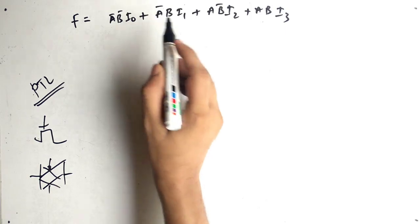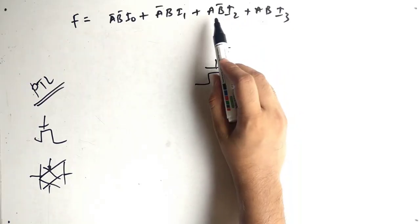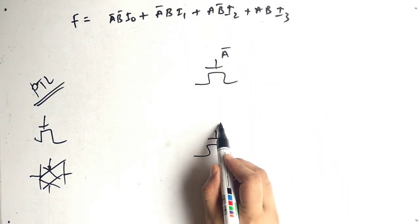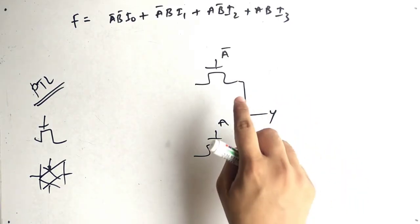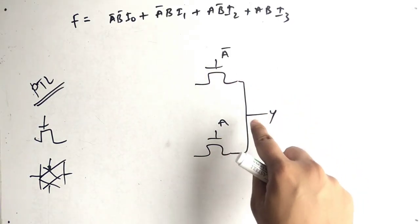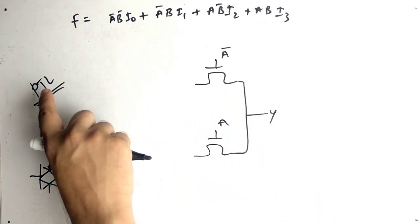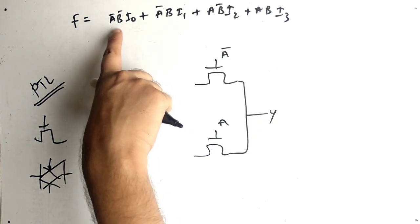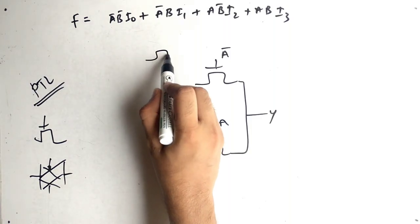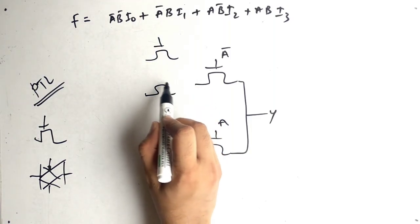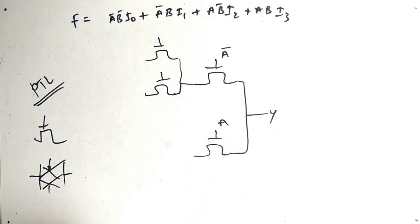A̅ is common across the first two terms, so write A̅. A is common across the last two terms, so write A. Whenever terms are added, just join them — that represents addition. Now we also need B̅, B, B̅, B for the remaining logic. We have two sub-terms that are multiplied together.